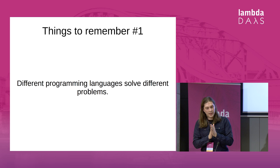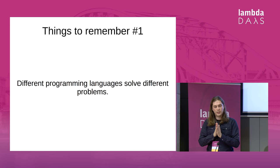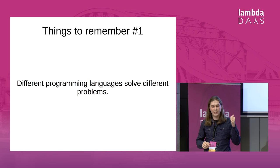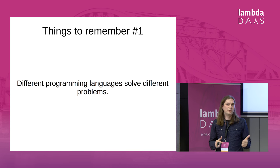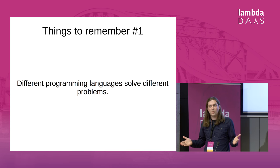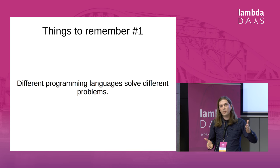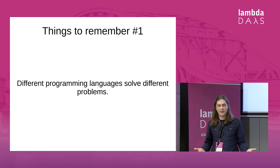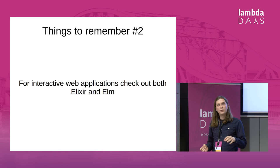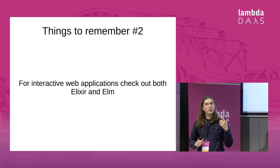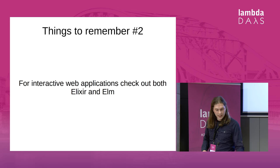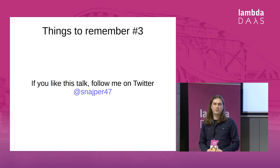So this is basically all I wanted to say, and there are just three things to remember. First: different programming languages solve different problems — so if someone says language A is better than language B, ask them to build what exactly. Second: if you need to create a scalable and interactive application, check out both Elixir and Phoenix and Elm. And third: if you liked this talk, follow me on Twitter. Thank you very much.